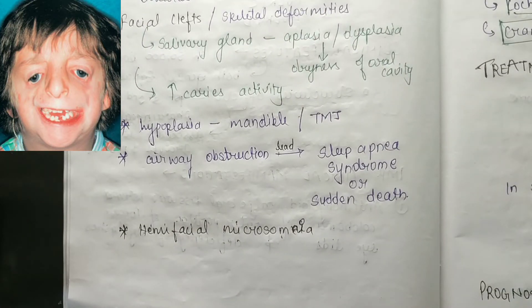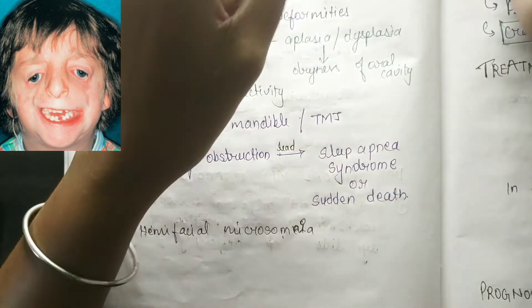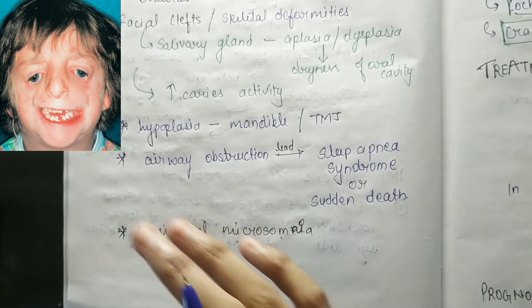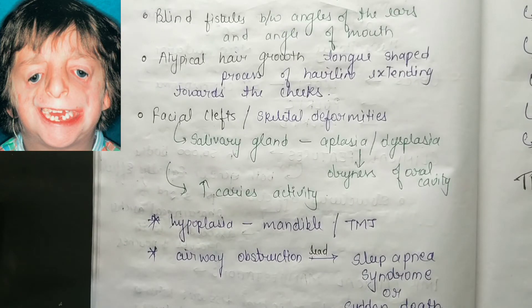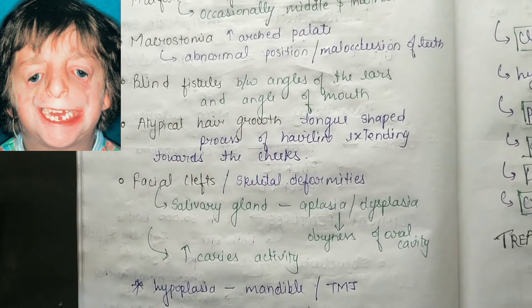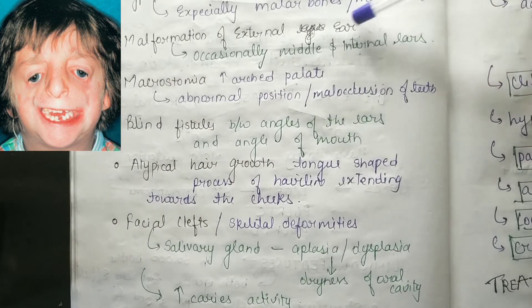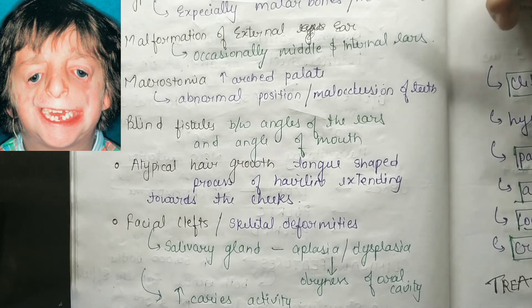Both the mandible and face are involved. The eyes, ears, and other facial structures can all be affected. Key features to remember are: deficiency of eyelashes, malformation of external ear, macrostomia, blind fistulas, atypical hair growth, and facial clefts.